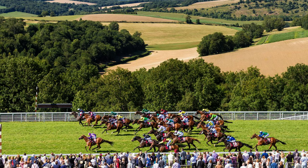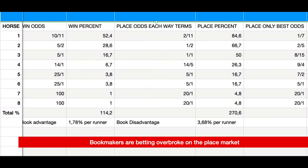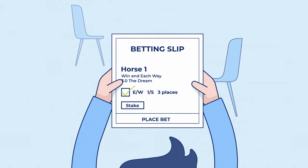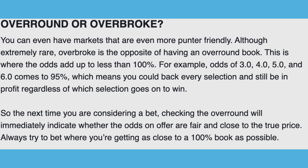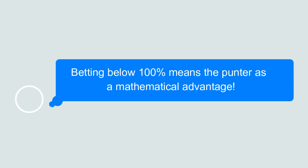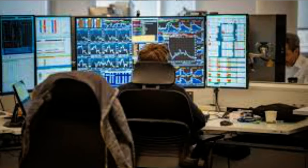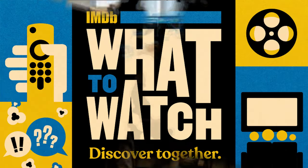Going back to the race we covered earlier - I want to show you this chart. You've got the eight runners, and if you look at the total percent at the bottom, the total percent for the win market is 114.2%, whereas for the place market it's 270.6%. There are three places, so three divided into 270 equals 90.2%. The bookmakers need to get it over 100% to make their theoretical profit - so they are actually betting over broke here. These are the type of advantages you're looking for.